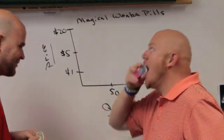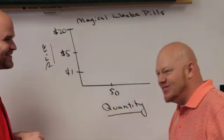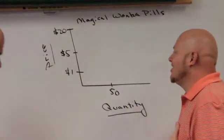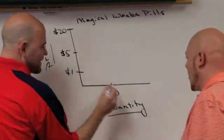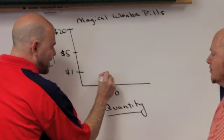$1. Here's your Magical Wonka Pills. Now you can survive a minute longer. Thank you I'm not a commie anymore. So at $1 he was willing to buy 50.